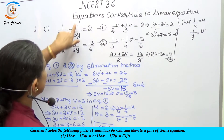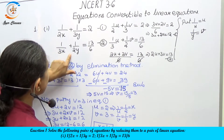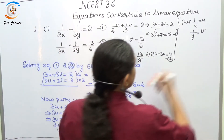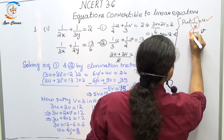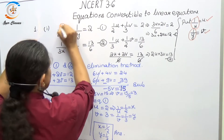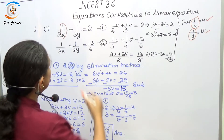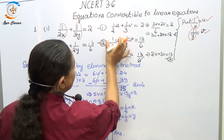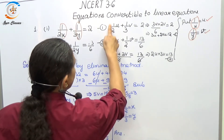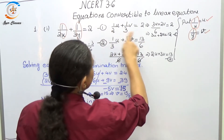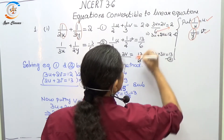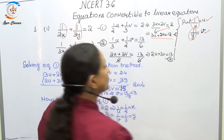The very first question: 1/(2x) + 1/(3y) = 2 and 1/(3x) + 1/(2y) = 13/6. This is not a direct linear equation. To convert it, I put 1/x = u and 1/y = v. Substituting in the first equation: (1/2)u + (1/3)v = 2. Taking the LCM of 6, this simplifies to 3u + 2v = 12.